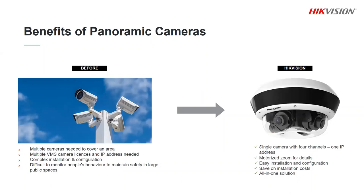One type of our PanorView range combines multiple lenses all into one unit. The lenses can be individually adjusted and they're varifocal, so you can get the same coverage you would have done with multiple cameras but you only have one unit to install. This saves time and money, and it only uses one IP address so on most VMS systems it's only going to use one camera license.